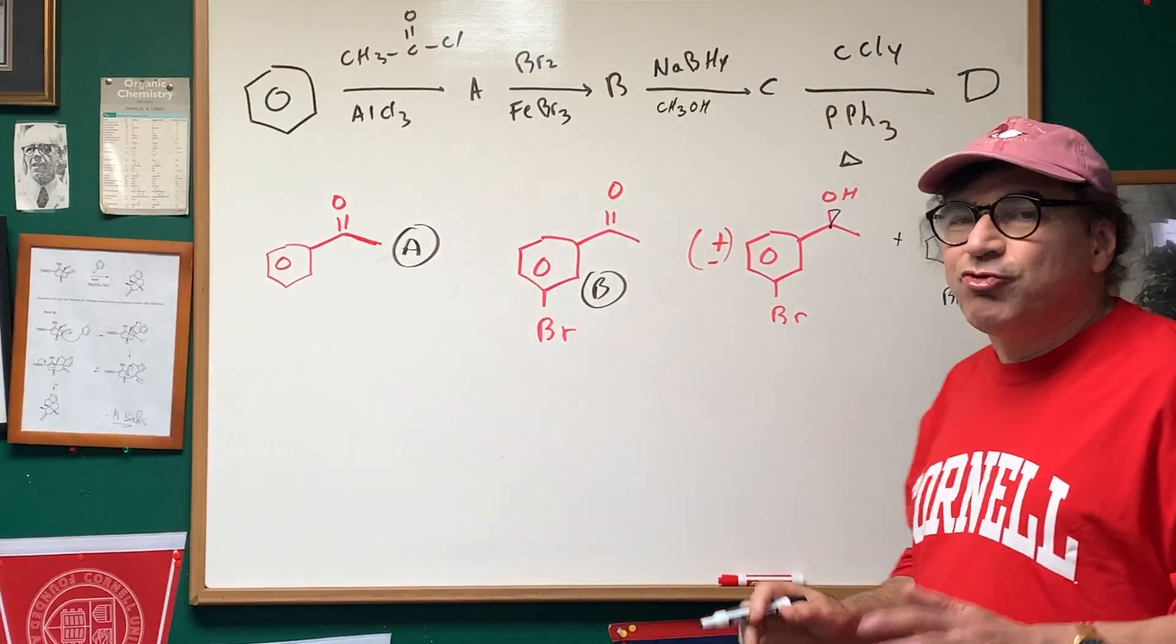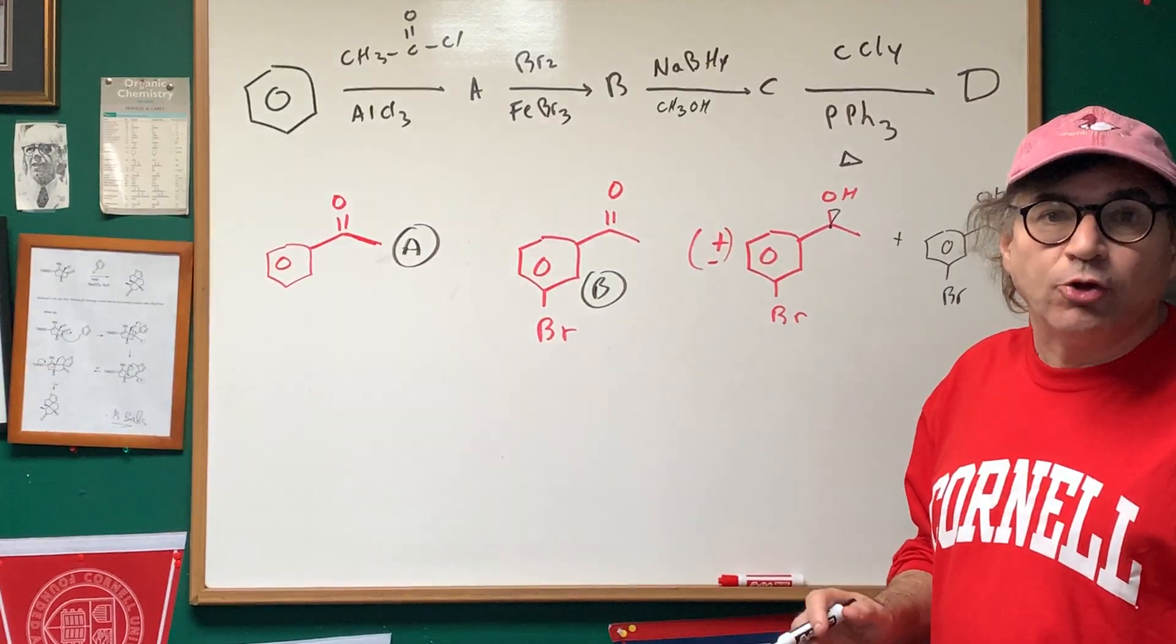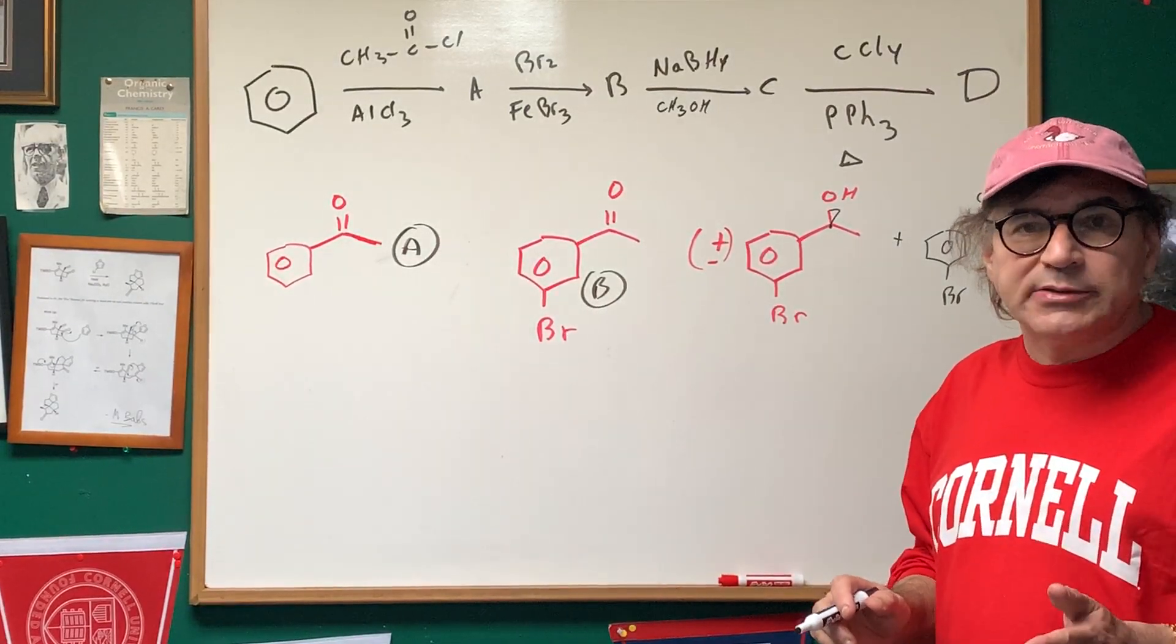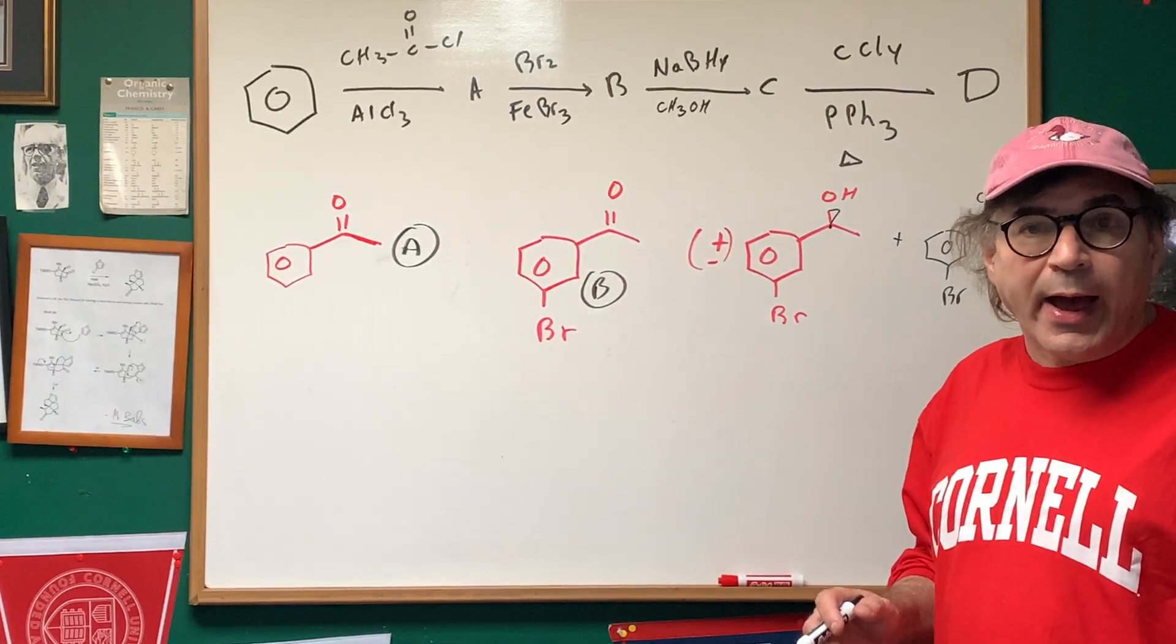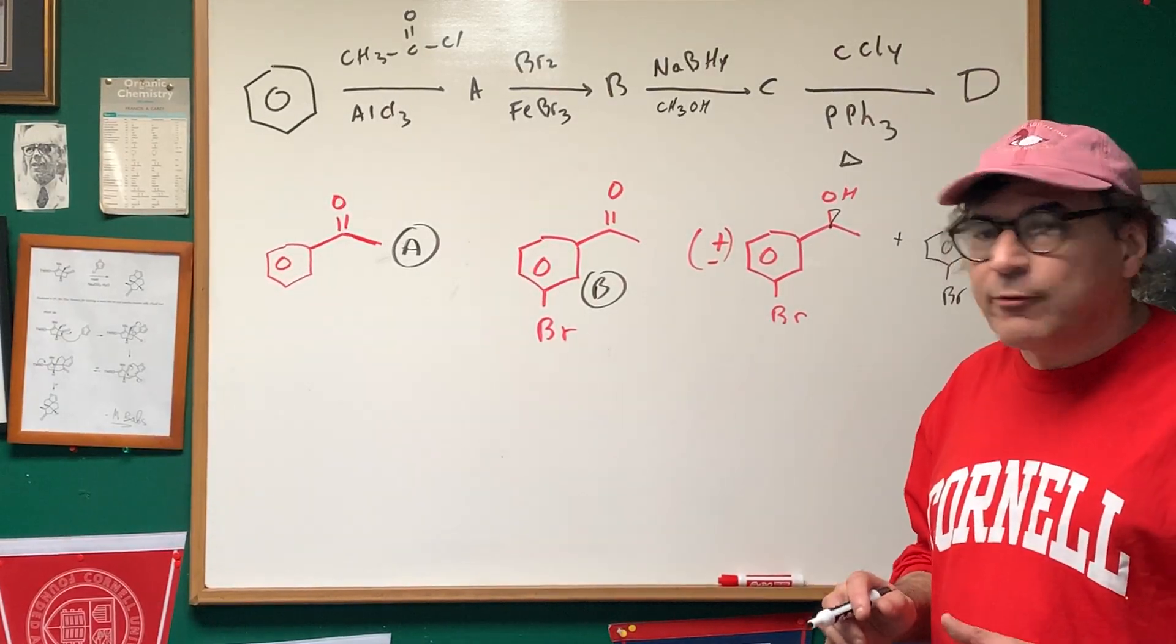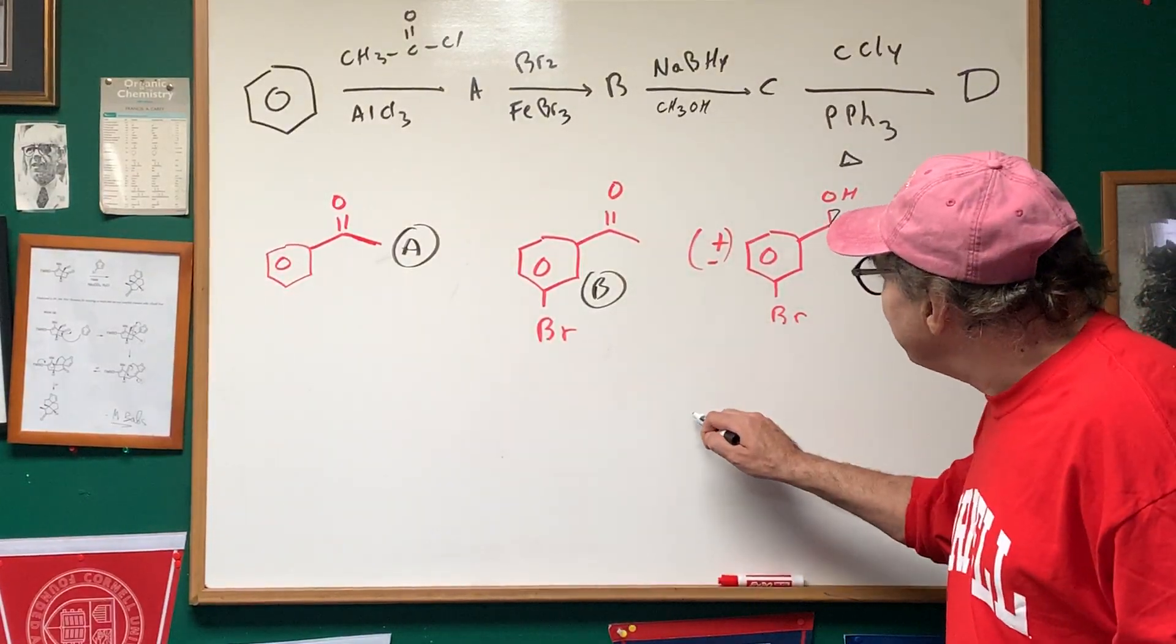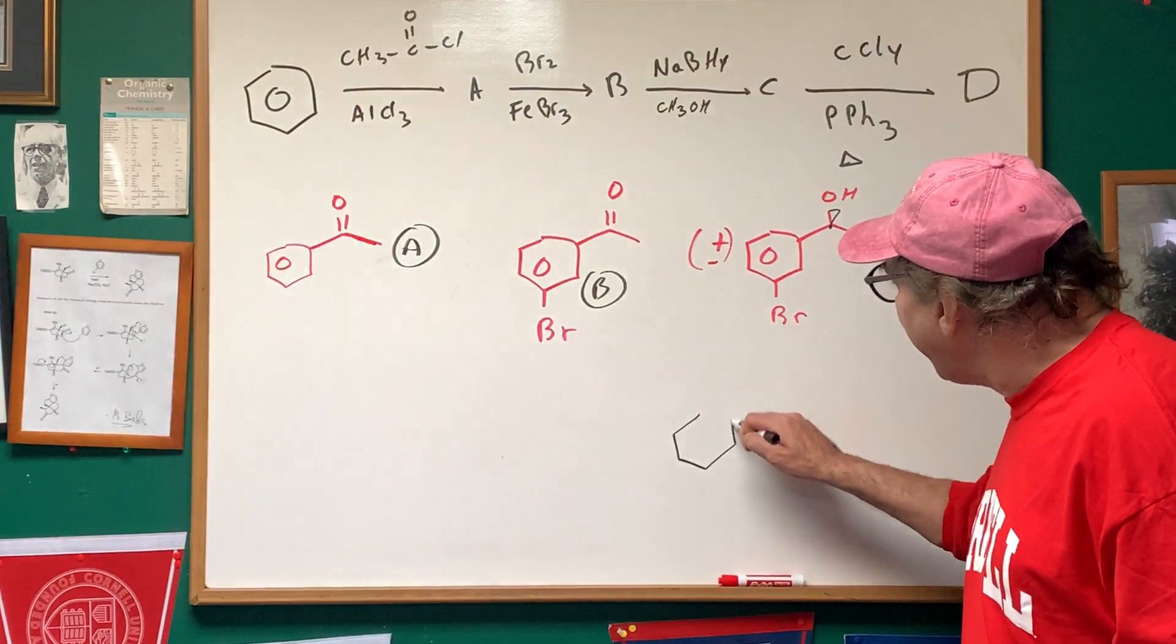this is the last step, which you might not know. It's called the Appel reaction. And what it simply does, it replaces an OH group with a halogen. It's one of my favorite reactions, and it does an inversion. So, therefore,